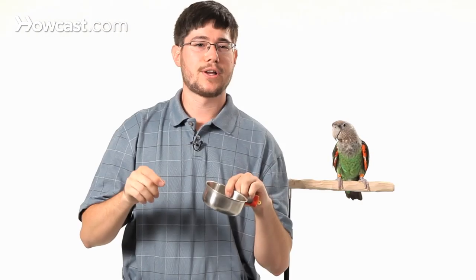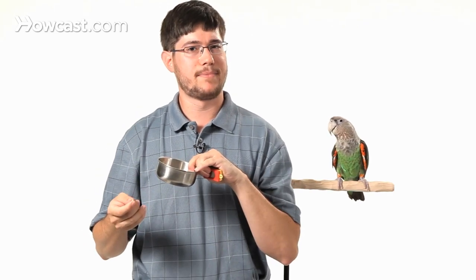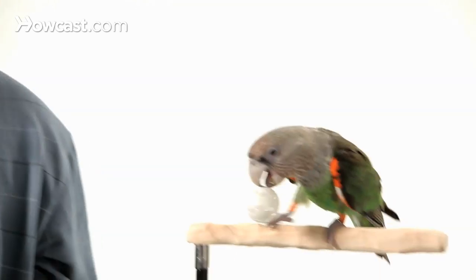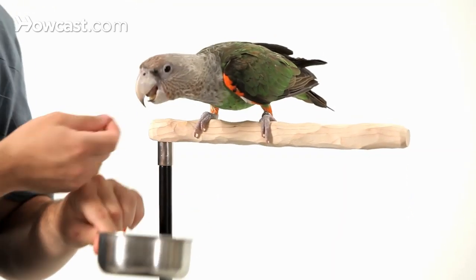The idea is to teach the bird to drop it right in the bowl and not anywhere else. So at first, the bird's just learning that it's getting rewards for dropping the object. Because you're giving it the object, it's holding it, and it drops it at some point, that's when it's getting treats.